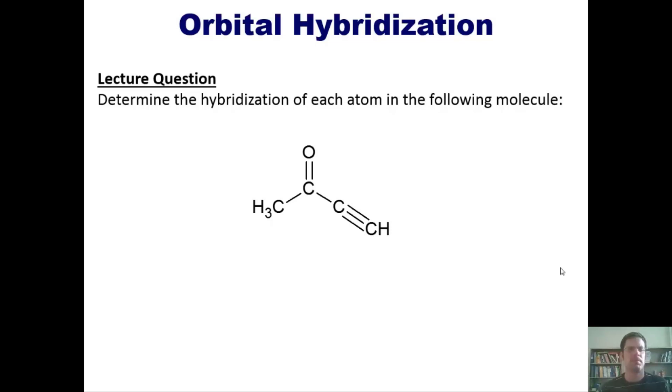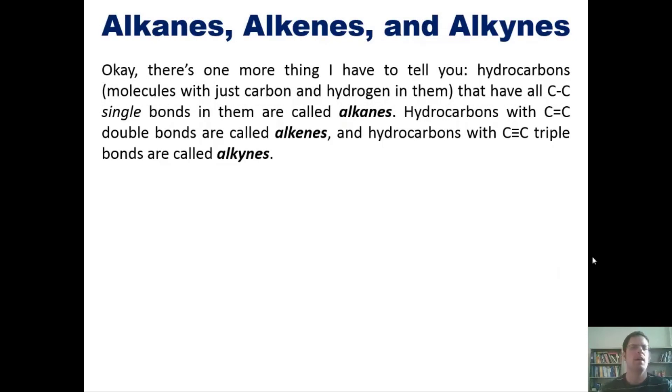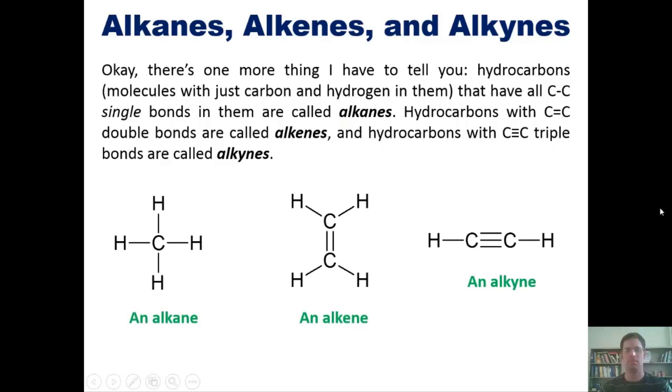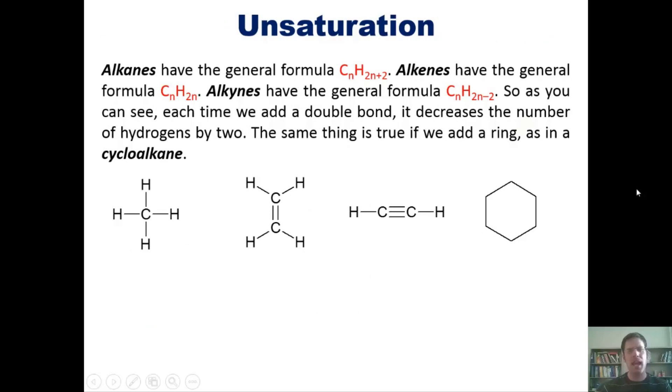There's one more thing I need to tell you: hydrocarbons with all C-C single bonds are called alkanes. Hydrocarbons with C=C double bonds are called alkenes, while hydrocarbons with C≡C triple bonds are called alkynes. You can see all shown right here. Please memorize that because the names are important in organic chemistry.